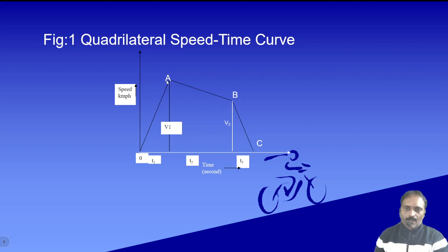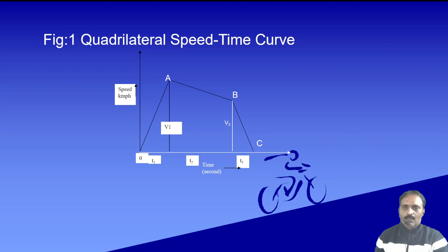At point A we cut off the supply. The vehicle moves on its own inertia and reaches point B, where the speed has been reduced to v2. From A to B the vehicle undergoes coasting retardation, represented as beta-c, in kilometers per hour per second.